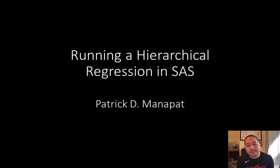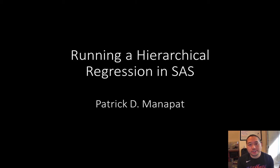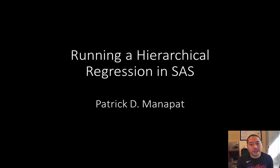Then we'll go into the hierarchical regression, where we'll be estimating three regression models in sequence. For each regression model we'll be adding a set of predictors. Our biggest question is how does each set of predictors contribute to the prediction of Y. To formally test this, we'll be looking at the R-squared change, which is an F-test that tests whether the additional sets of predictors offer a significant amount of prediction for our criterion.